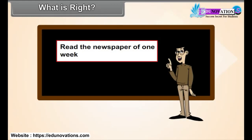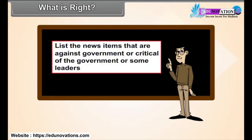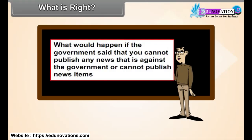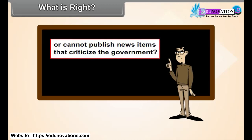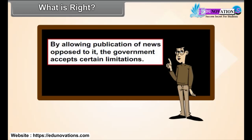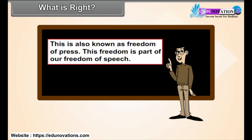Read newspapers of one week. List the news items that are against the government or critical of the government or some leaders. What would happen if the government said that you cannot publish any news that is against the government? By allowing publication of news opposed to it, the government accepts certain limitations. This is also known as freedom of the press. This freedom is part of freedom of speech.